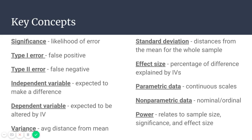Parametric data is continuous scales — math works with parametric data, whereas in non-parametric data, math doesn't work. Non-parametric is nominal or ordinal, meaning a number is assigned to it, like a yes is a 1 and a no is a 2. If you want to do a mathematical test of a score, that's parametric data; if you want to compare the difference between a yes answer and a no answer, that's non-parametric. Power is a relationship between sample size, significance, and effect size, and it shows how strong your results would be.